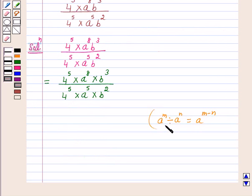So by using this law of exponent we have this is equal to 4 raised to power 5 minus 5 into a raised to power 8 minus 5 into b raised to power 3 minus 2 and this is again equal to 4 raised to power 0 into a cube into b raised to power 1 or simply we can say b.